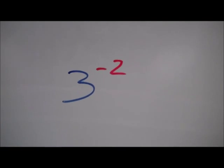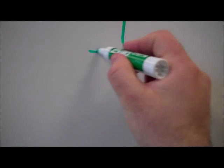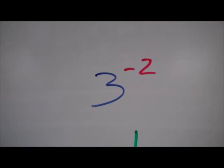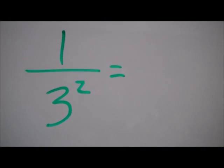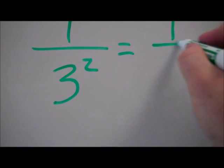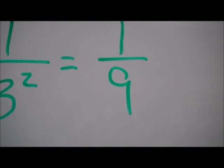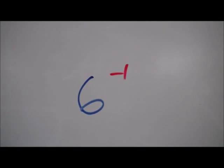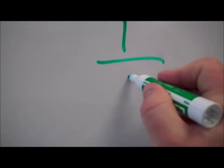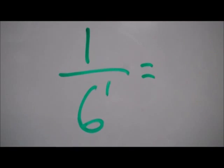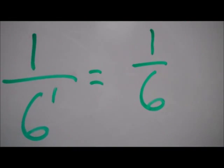3 to the negative 2. Any time I have a negative exponent, I'm going to make it 1 over, and I just write the same thing: 3 squared. 3 squared is 9, so 3 to the negative 2 power is 1 over 9. 6 to the negative 1 is the same thing as saying 1 over 6 to the first, which is 1 over 6.